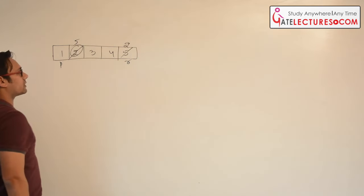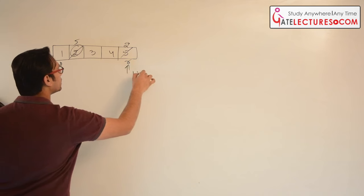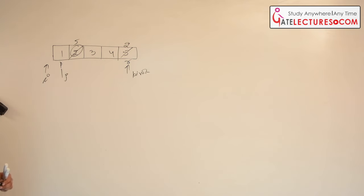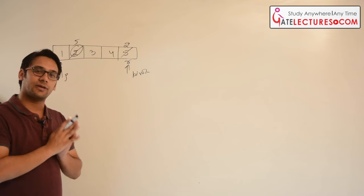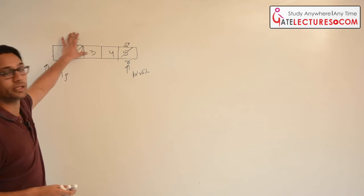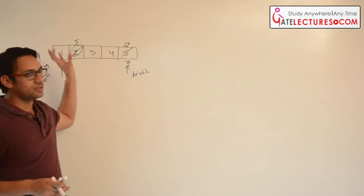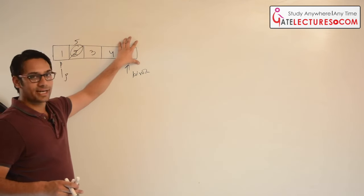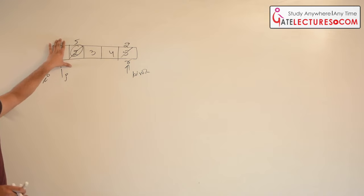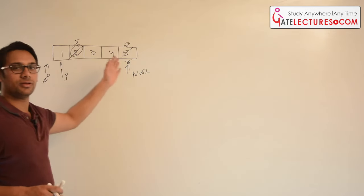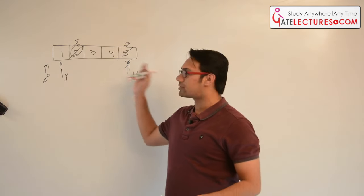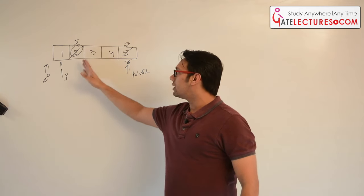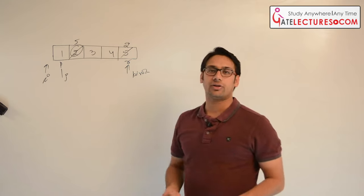Now we apply quicksort again — same procedure: choose a pivot, choose i, choose j, and so on. What we are doing is: if the array is already sorted, we make it unsorted by swapping with a random index between p and r. This way, the partition will not land at the exact end — it will land somewhere in the middle. On average, there are very good chances of choosing a number between p and r, so it takes O(n log n) time on average.